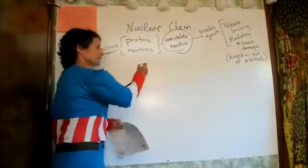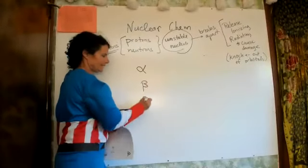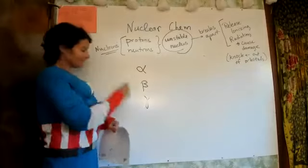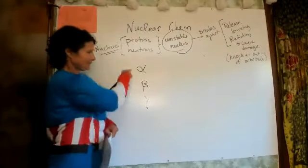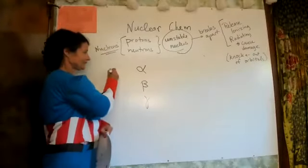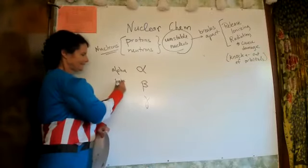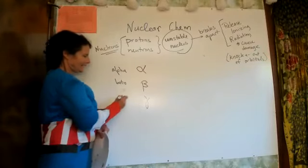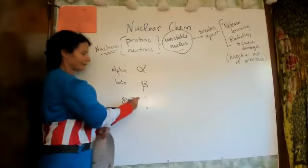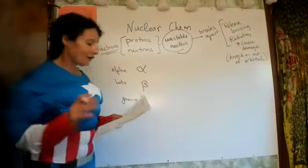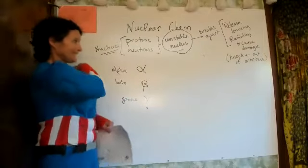The symbols are alpha, beta, and gamma. They're all ionizing radiation and they're all going to cause damage. The full symbol for alpha is four on top and two on the bottom — the top number is the mass number.